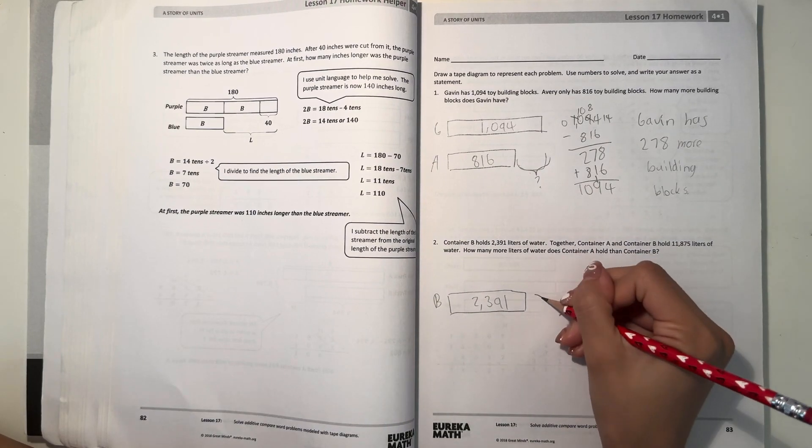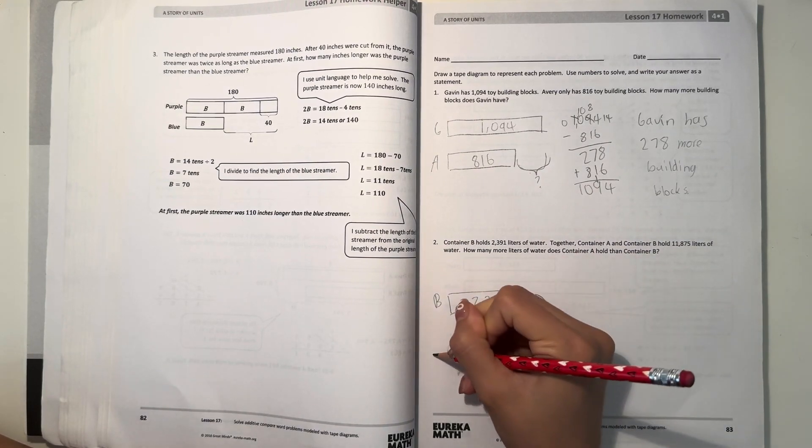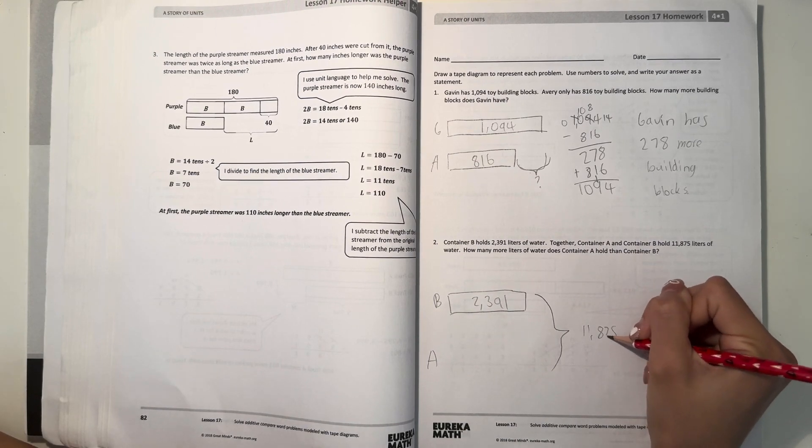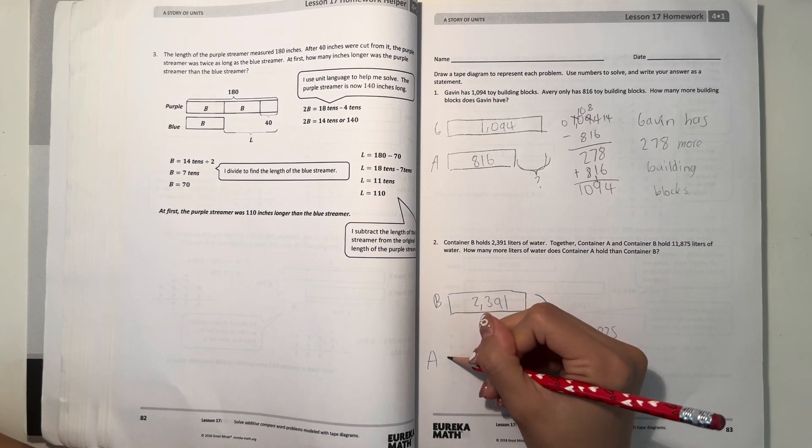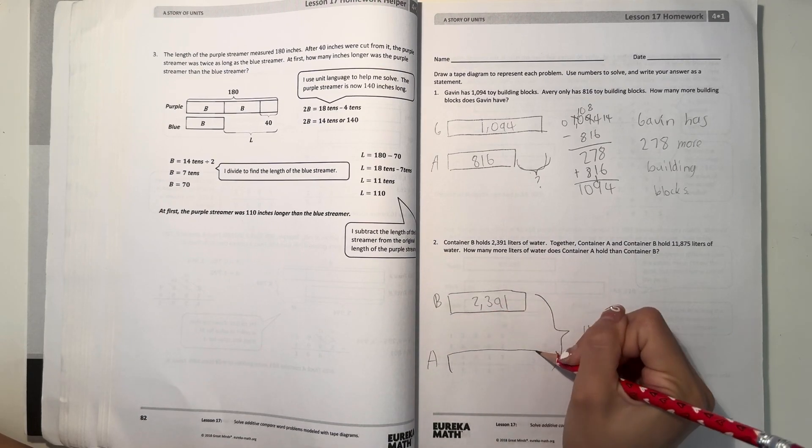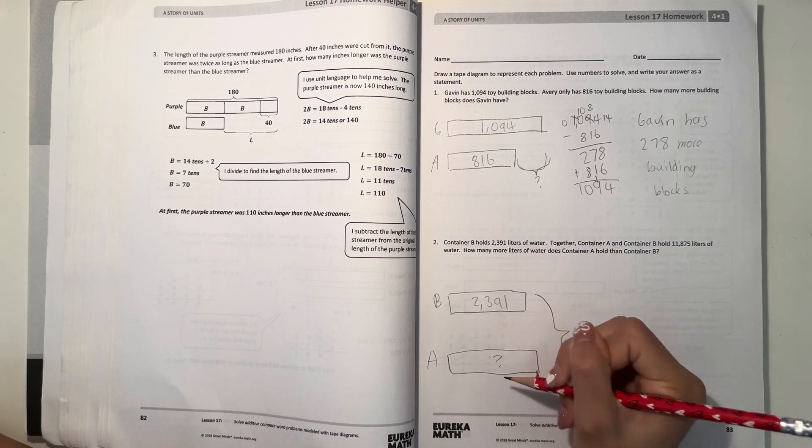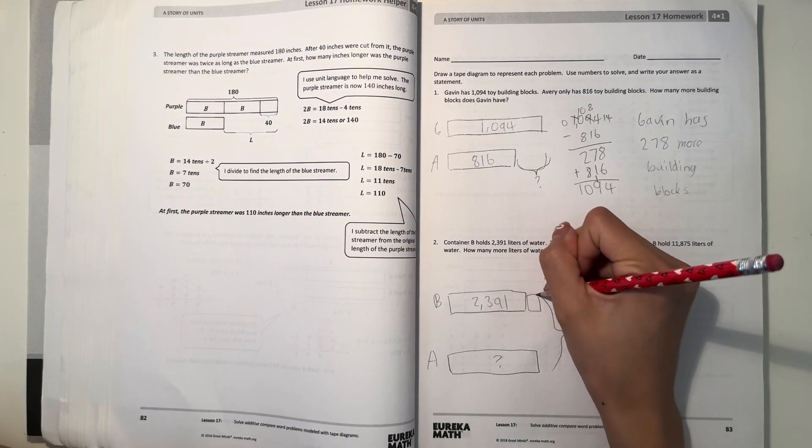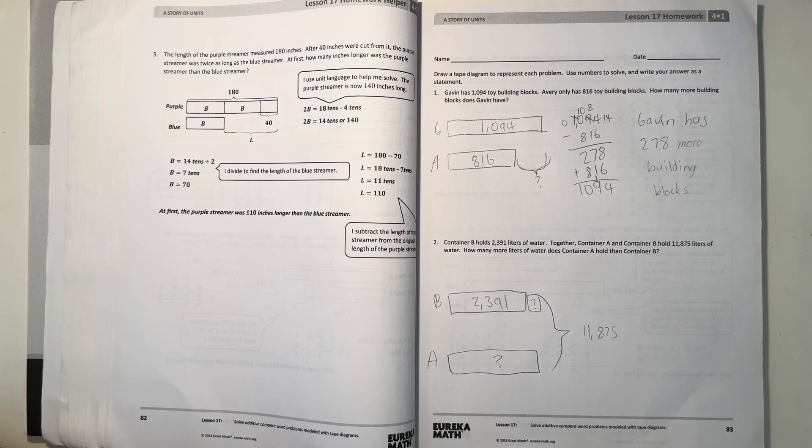B we know it holds 2,391 liters. And all together, container B and A hold 11,875. So what we're trying to figure out is how many more liters container A holds. So we want to figure out how many container A holds first of all, and how many more it holds than container B.